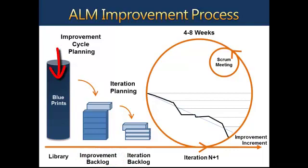The blueprints provide examples of valid improvement items that are leveraged to pre-populate your improvement backlog — for example, how to implement bug management, continuous integration, or source control with TFS. Once again in line with Agile concepts, a project is comprised of multiple iterations whereby prioritized improvement items are selected from the backlog for implementation. A completed item is expected to be evidenced in practice. In this case, the framework borrows from the concept of definition of done.